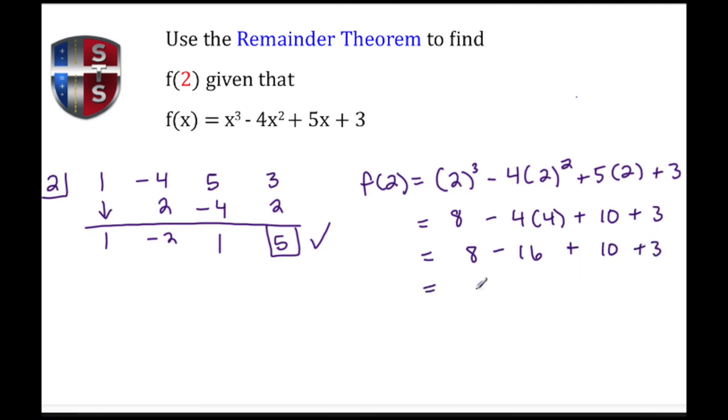8 minus 16 gives me negative 8. I rewrite my 10 and my 3. Negative 8 plus 10 gives me 2. I rewrite the 3, and then 2 plus 3 gives me 5.